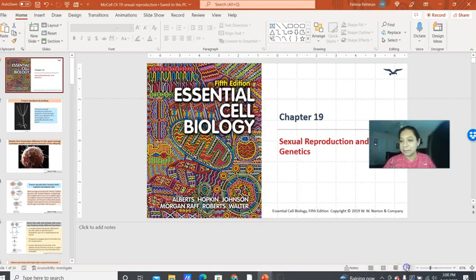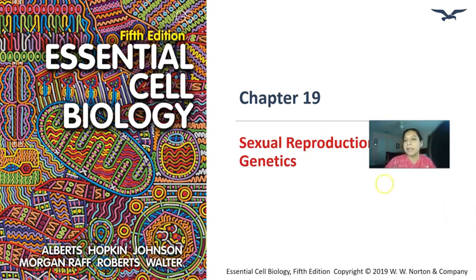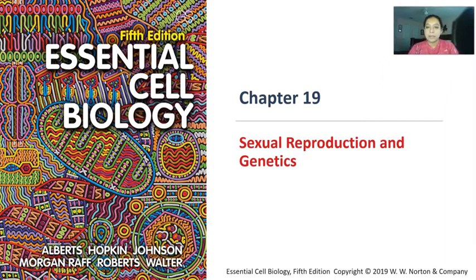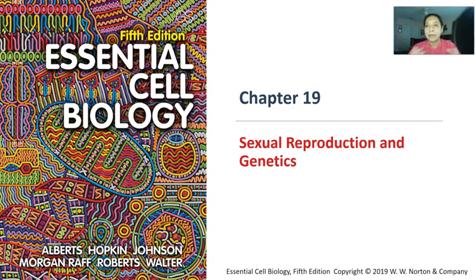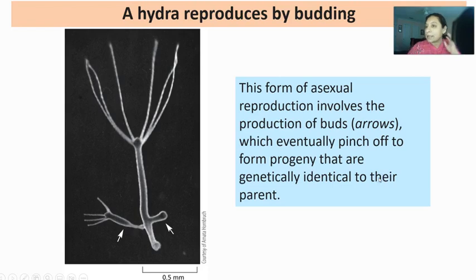Welcome. Today I'm going to be talking about chapter 19 in Essential Cell Biology — the chapter that covers sexual reproduction and genetics. It's a bit of a catch-all chapter with information from many chapters we've already covered, bringing together those processes and systems as they relate to sexual reproduction and genetic inheritance.